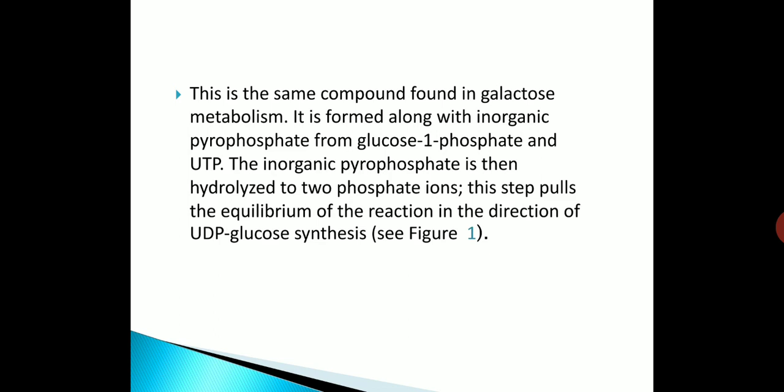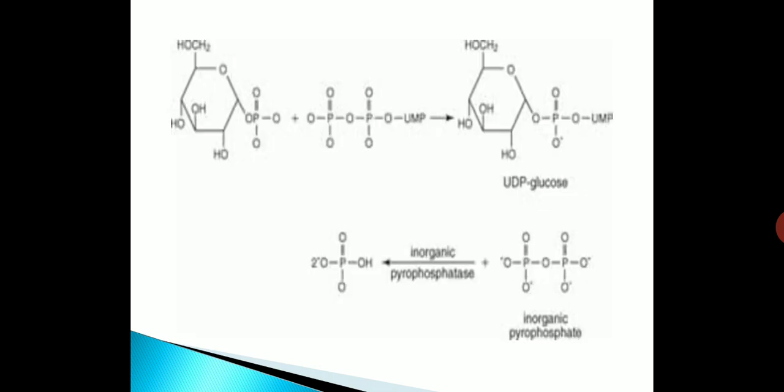The extra energy is supplied by the formation of the intermediate UDP-glucose, the same compound found in galactose metabolism. It is formed along with inorganic pyrophosphate from glucose 1-phosphate and UTP. The inorganic pyrophosphate is then hydrolyzed to two phosphate ions, pulling the equilibrium in the direction of UDP-glucose synthesis.